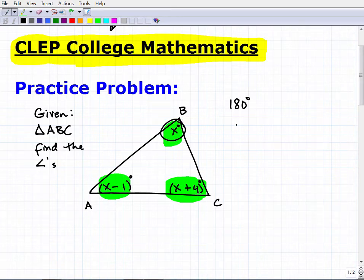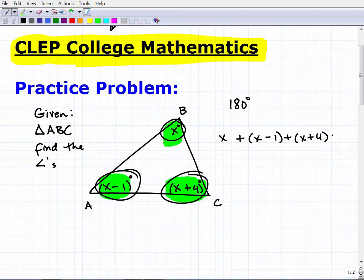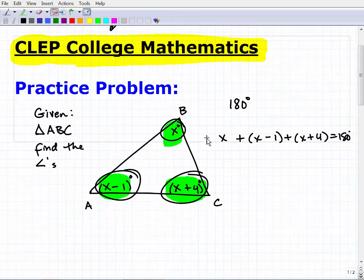So knowing this, I can write myself a nice little basic equation. So let's take this angle X and then we'll add it to this angle X minus one. And then we'll add it to this angle X plus four.